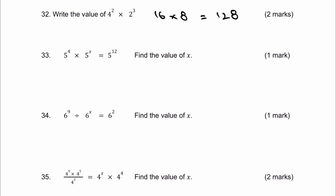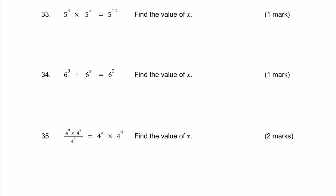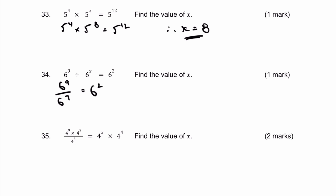These final questions are fairly representative of grade 4, knocking on the door of grade 5. When we add the indices together we're going to get 12. The only way to get that is 5 to the 4 times 5 to the 8, because 4 plus 8 equals 12. Therefore x must equal 8. For the next one: 6 to the 9 divided by 6 to the 7 — 9 take away 7 equals 2 — so x must equal 7.